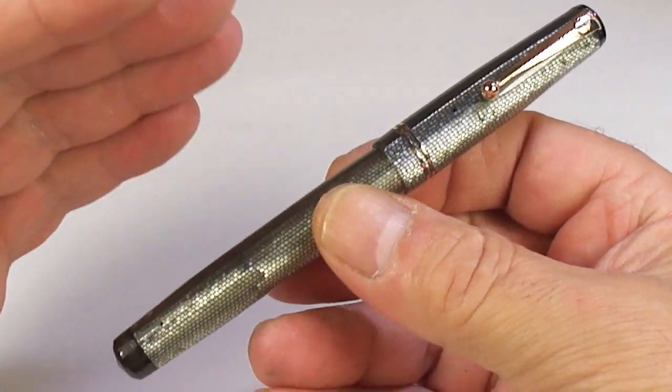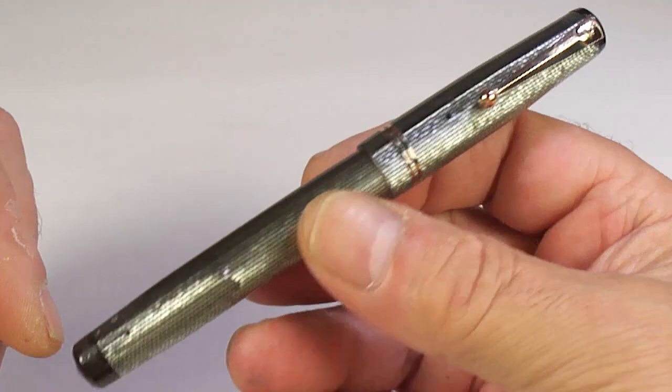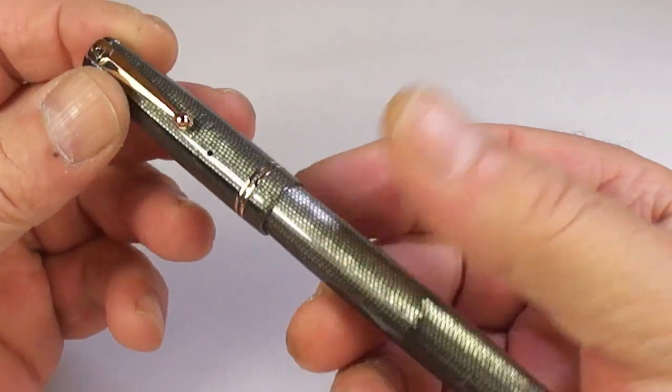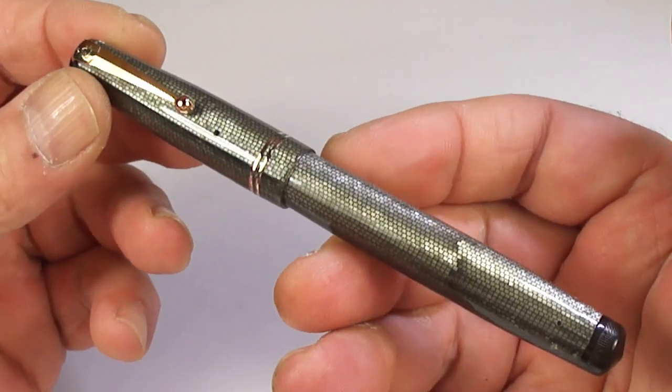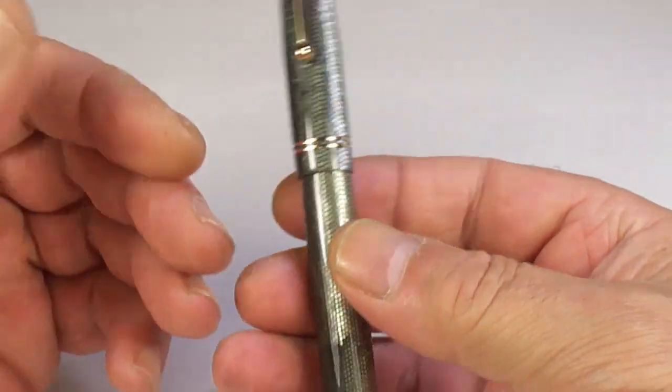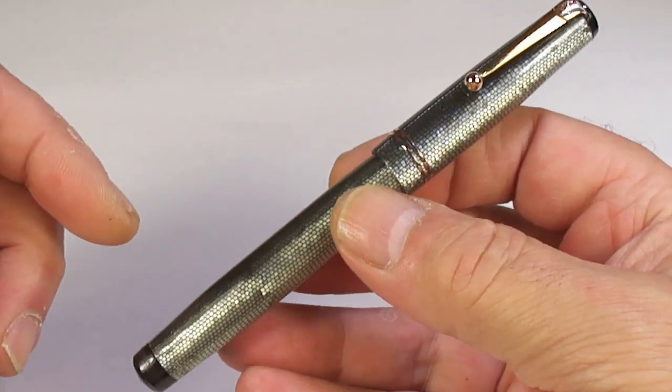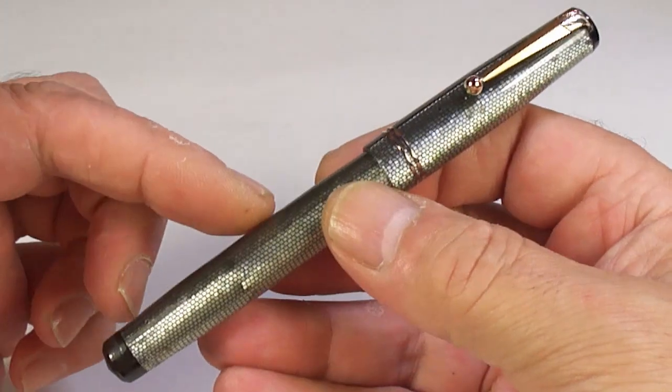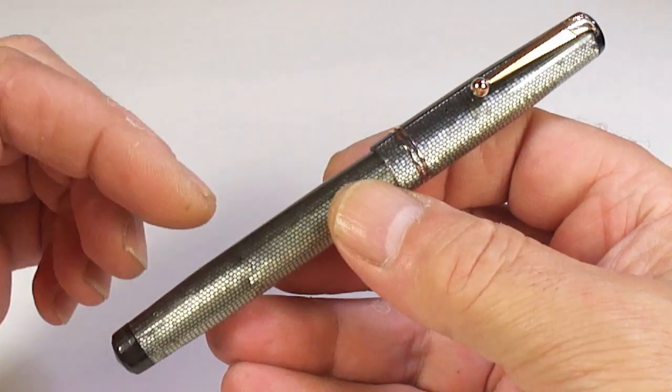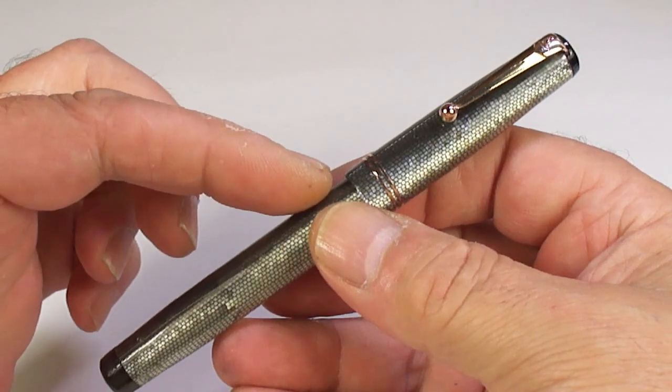They came in reds, blues, greens, all different coloured lizard skins. But this one, the 312-90, is the silver lizard skin from round about early 1932s, a lovely size pen.